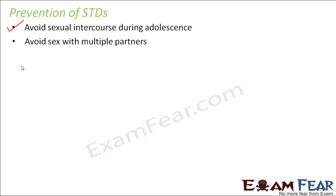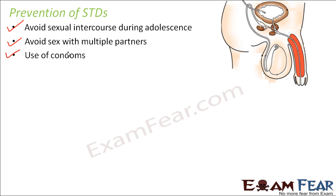Avoid sex with multiple partners. Even when people start having sexual intercourse, they should never have it with multiple partners, because the more the number of partners, the greater the risk of STDs — you will never know who is suffering from what. It is also very important to use physical barriers like condoms, so that the penis and the vagina do not come in direct contact with each other, and that is how transmission can be avoided.